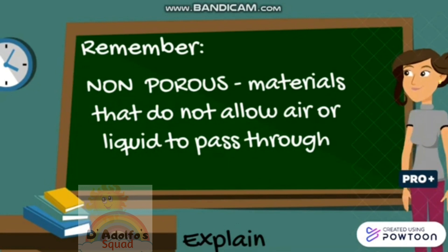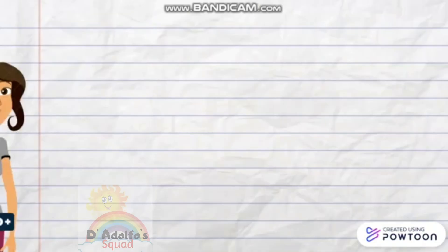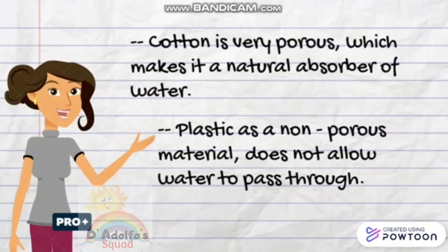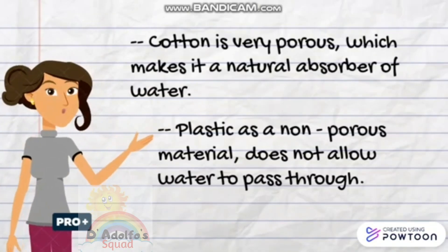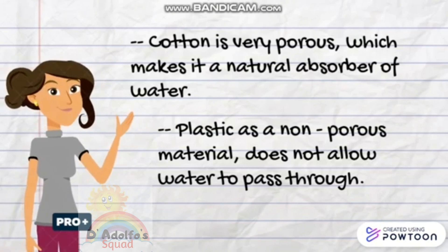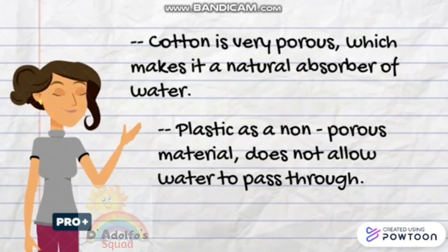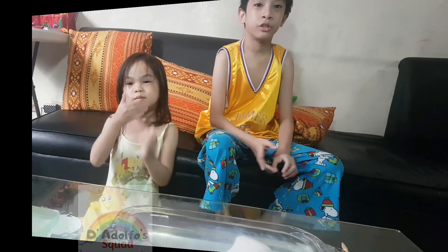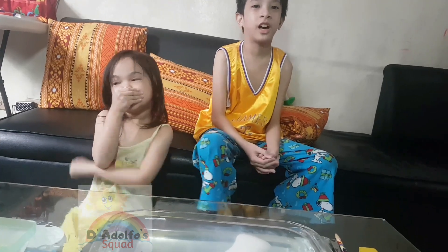materials that do not allow air or liquid to pass through. Cotton is very porous, which makes it a natural absorber of water, while plastic as a non-porous material does not allow water to pass through. That's it guys, thanks for watching! Please click the like button and subscribe for more videos. Bye!